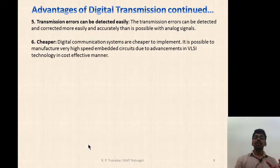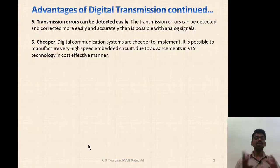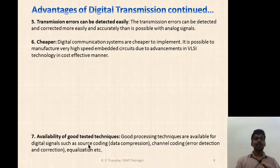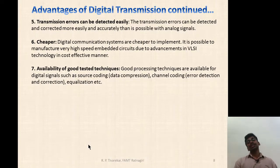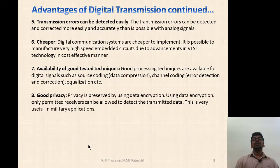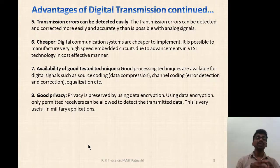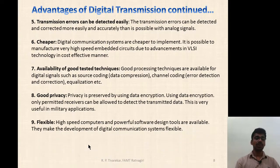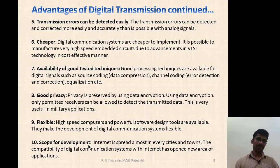Digital communication is cheaper because it is possible to manufacture very high-speed embedded circuits due to advancements in VLSI technology in a cost-effective manner. The availability of good tested techniques makes it superior to analog transmission. We have good privacy because encryption techniques can be used, making the system more secure — only the transmitter and receiver know what is being transmitted. It is also very flexible with scope for further development.